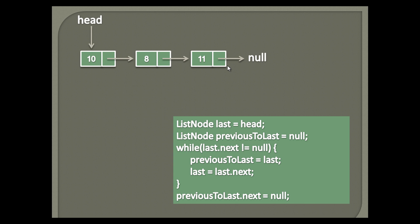Let's delete last node of linked list shown in slide. In order to delete last node from a linked list, we need to disconnect it from the list. That is, the node previous to last should not reference it. In order to perform these steps, we need to traverse to the previous node of last, and update its next pointer to null. Below is the algorithm for this.